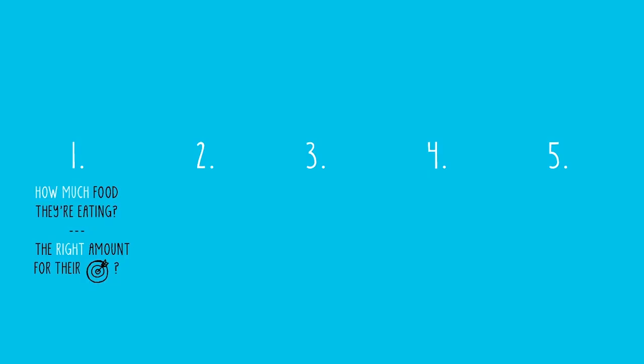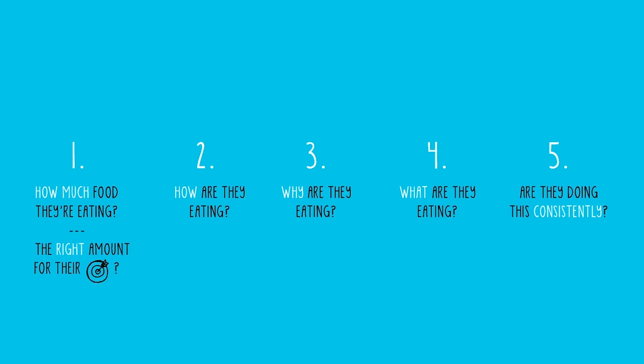You've just learned a lot of information, but all you really need to discuss with your clients are these five things: 1. How much food they're eating each day, and if they are eating the right amounts for their goals. 2. How they are eating — for example, are they eating slowly and enjoying their food? 3. Why are they eating each day — for example, are they eating when they're actually hungry? 4. What are they eating each day — do they consume mostly minimally processed foods from all categories of macronutrients? And 5. Are they doing all of this consistently? If not, keep it simple and focus on how much, why, and what they're eating first, and whether they're doing it consistently.